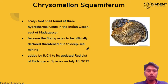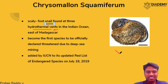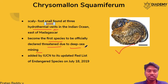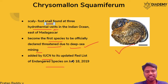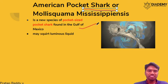Chrysomelon squamiferum is a type of snail found in hydrothermal vents. Due to this extreme environment, it has a scaly structure visible in figures. It has become the first species to be officially declared as threatened due to deep-sea mining. It has been added by IUCN as an endangered species on the Red List. The American pocket shark, found in the Gulf of Mexico, is called a pocket shark because of its small size. It releases a type of luminous liquid.